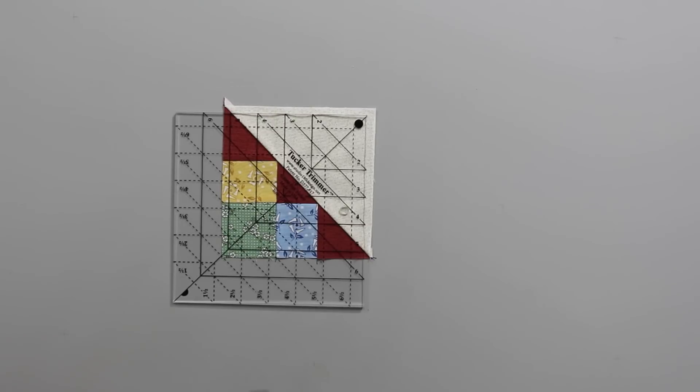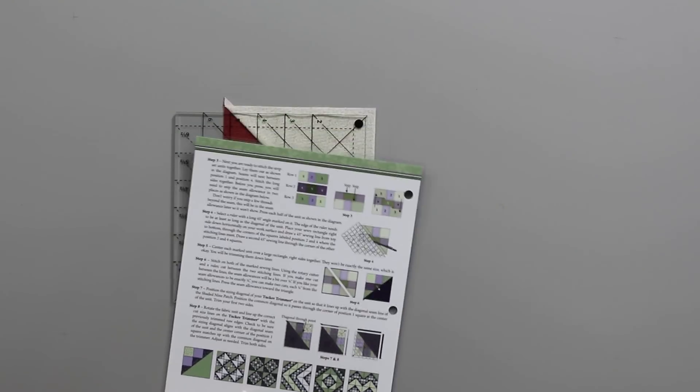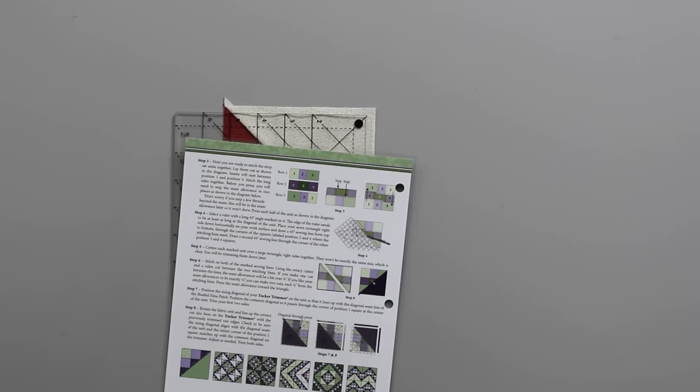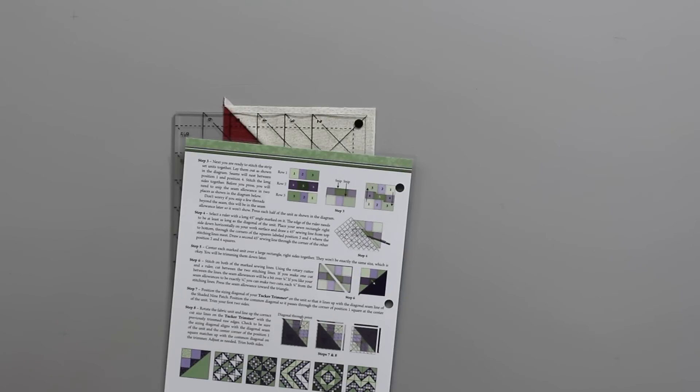You can take this and create all kinds of different designs. The back of the technique sheet gives you a couple of different design possibilities, but there's so many more. You can take this and treat it like a half square triangle and create endless possibilities with that shaded nine patch.